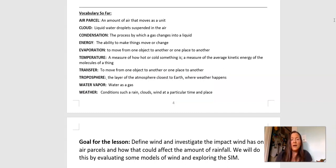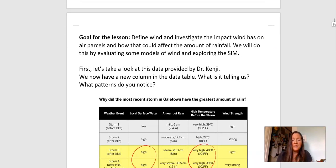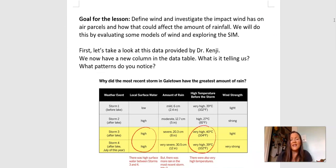Okay, brief review of our vocabulary. We've done the vocab review a lot, so hopefully you're very familiar with our vocabulary by now. Here's our goal for our lesson today. We're going to define wind and investigate the impact wind has on air parcels and how that could affect the amount of rainfall. We will do this by evaluating some models of wind and exploring the sim.